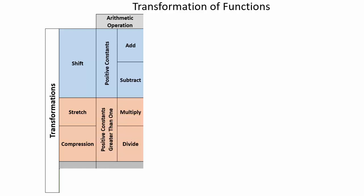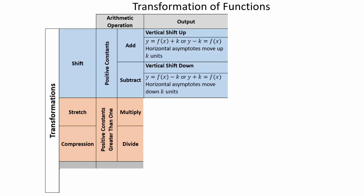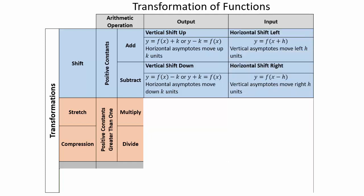Let's talk about a summary. With the arithmetic operation of adding or subtracting positive constants: you get a vertical shift up or vertical shift down if the constant is added or subtracted respectively with the output of the function. On the other hand, you get a horizontal shift left or right respectively if you add or subtract a constant in the input of the function.